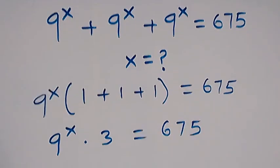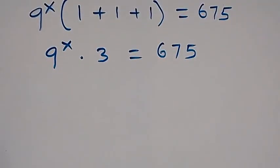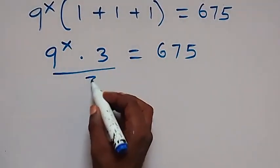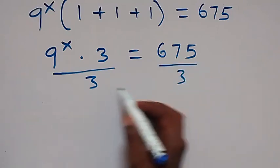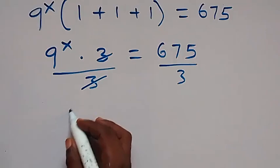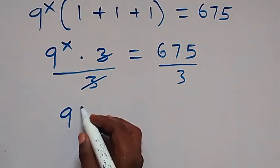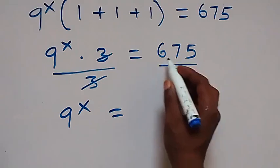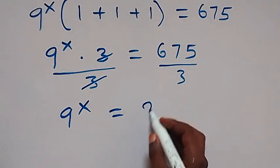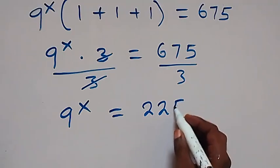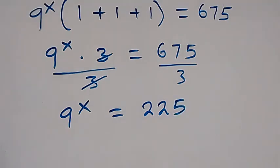We can divide both sides by 3. The 3s cancel out, and we are left with 9 to the power x, which equals 225.